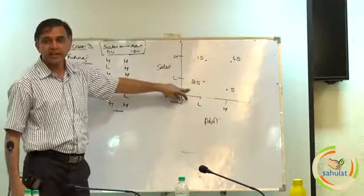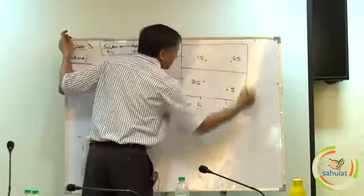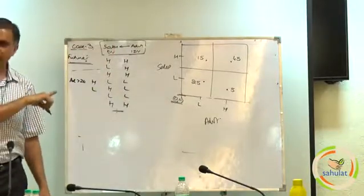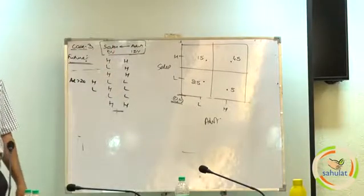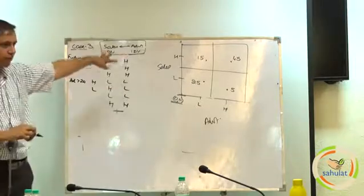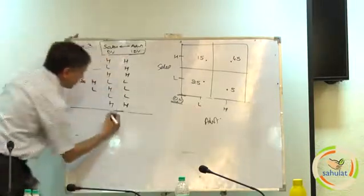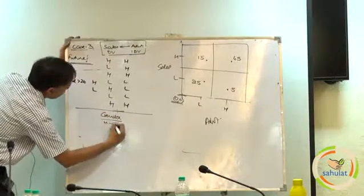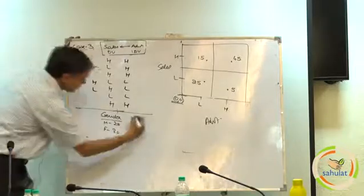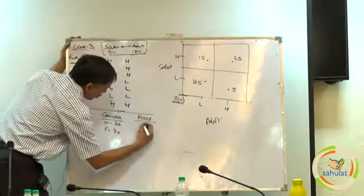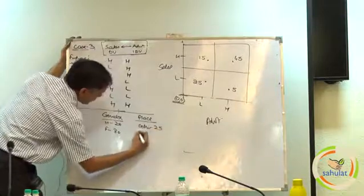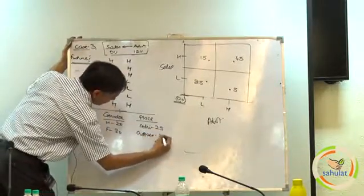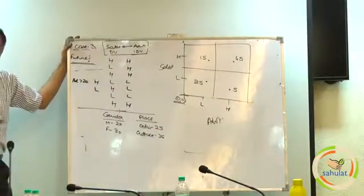Which technique should we apply? Look carefully — it is nothing but cross tabulation. Is it like cross tabulation? Are you aware of this sort of approach? If I tell you what is cross tabulation — I give you 2 figures: gender — in this workshop there are 20 boys and 30 girls; the place they belong to — from Delhi there are 25, from outside Delhi they are 25. Two sorts of data are there — two univariate variables are there.